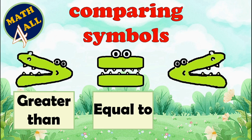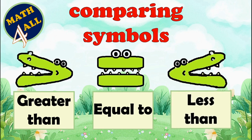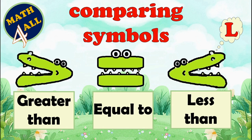Now we have the last symbol. When the mouth looks toward the right side, we call it 'less than.' As you can see, when you see 'less than,' you will remember the letter L. Look here — the mouth is open like the letter L, like this. So when you see this symbol, you will remember the letter L, or 'less than.'